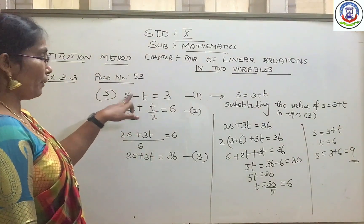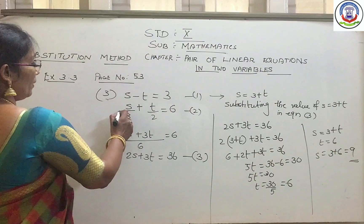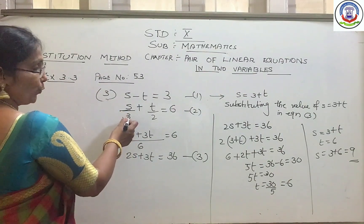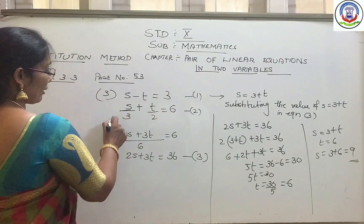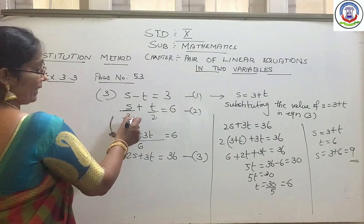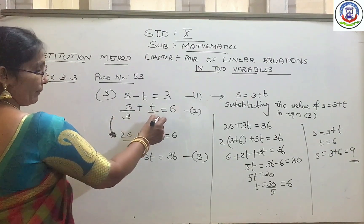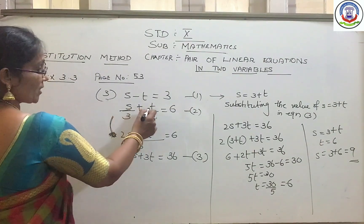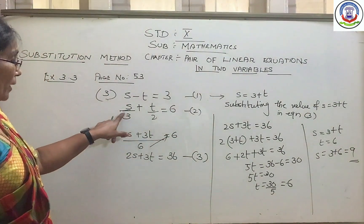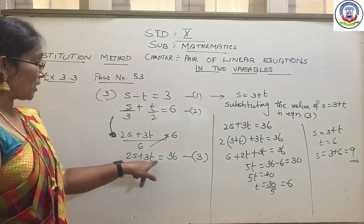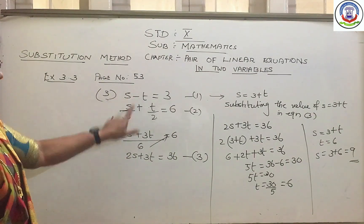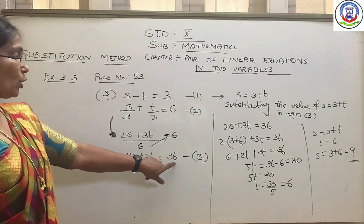The equations are already in linear form with variables s and t, but there are fractions, so you need to convert them to integer form. For the second equation, take the LCM, which is 6. Multiply s/3 by 2 and t/2 by 3 to get 2s plus 3t equal to 6, then cross-multiplying the 6 gives 2s plus 3t equal to 36. Now we have two equations: s minus t equal to 3, and 2s plus 3t equal to 36.